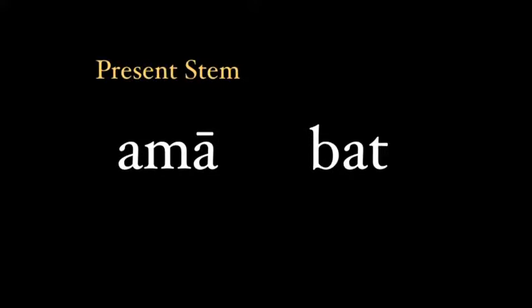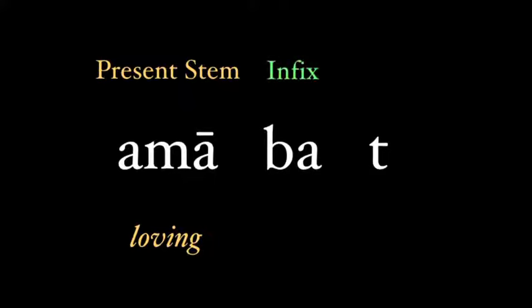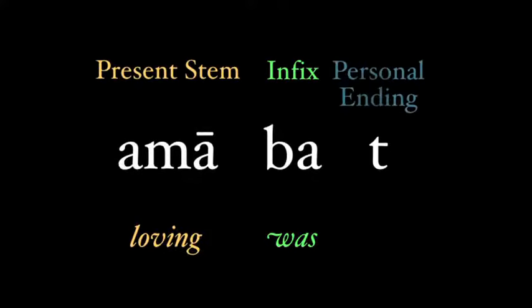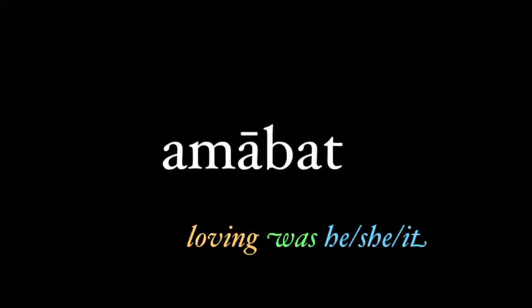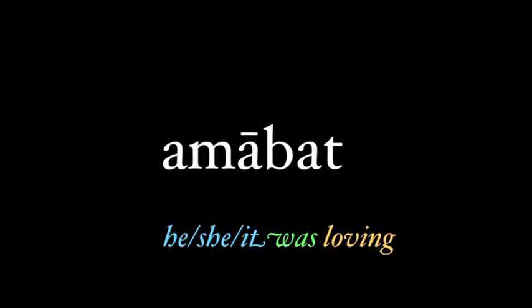Let's examine this. The verb 'amabat' is in the imperfect tense, and we can break it apart into its individual units. First, 'ama' is our present stem — this part gives us the meaning of the verb: loving. Next, we have the imperfect tense identifier, the infix 'ba.' This shows us the tense, and we can even put an English translation to it: 'was.' This is easy to remember because both 'ba' and 'was' share the same vowel sound. And finally, we have the 't', which is the personal ending — the thing that tells us who was doing the loving. Since it's a 't', we know that it's he, she, or it. Putting all these parts together, we get 'amabat': he, she, it was loving.